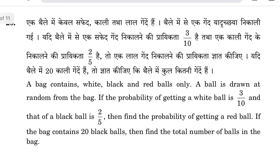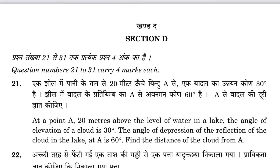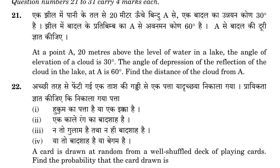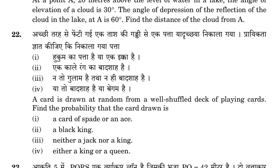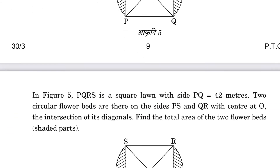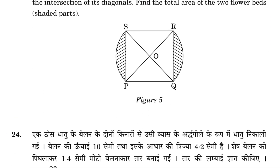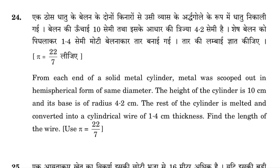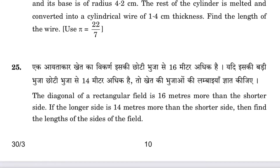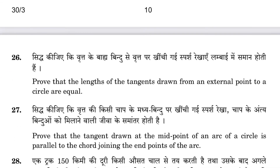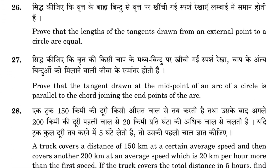Let's move to Section D. There are 11 questions in this section. Question 21 is on heights and distances and trigonometry, question 22 on probability, question 23 on areas related to circles, question 24 on surface area and volumes, question 25 on quadratic equations, and question 26 is on tangents.